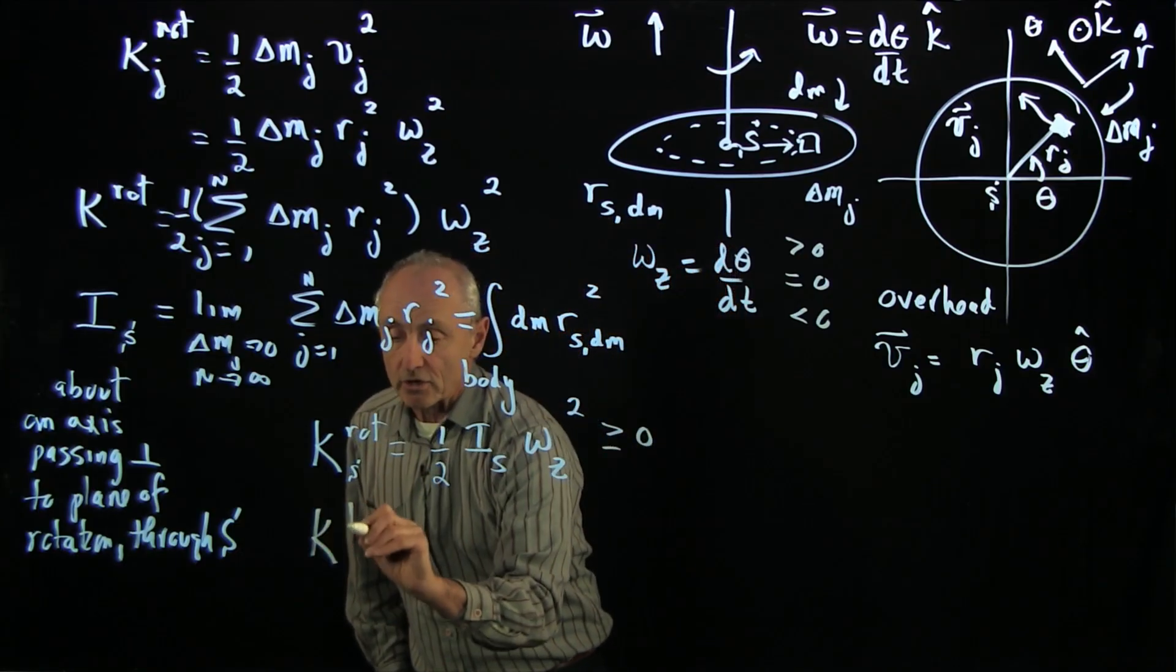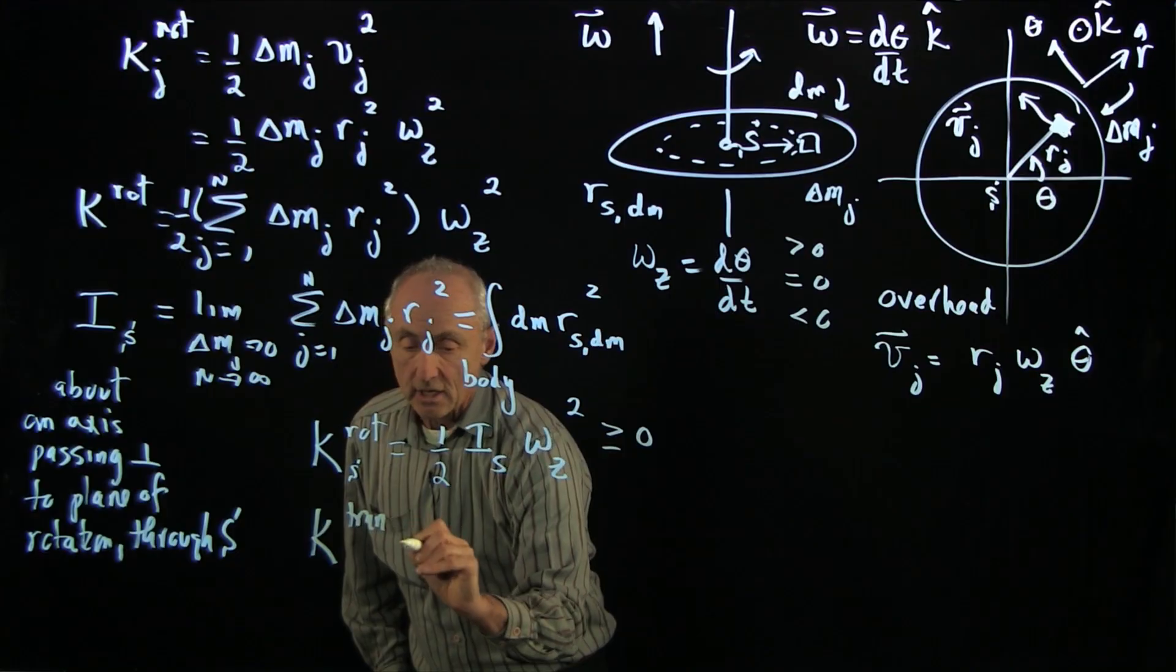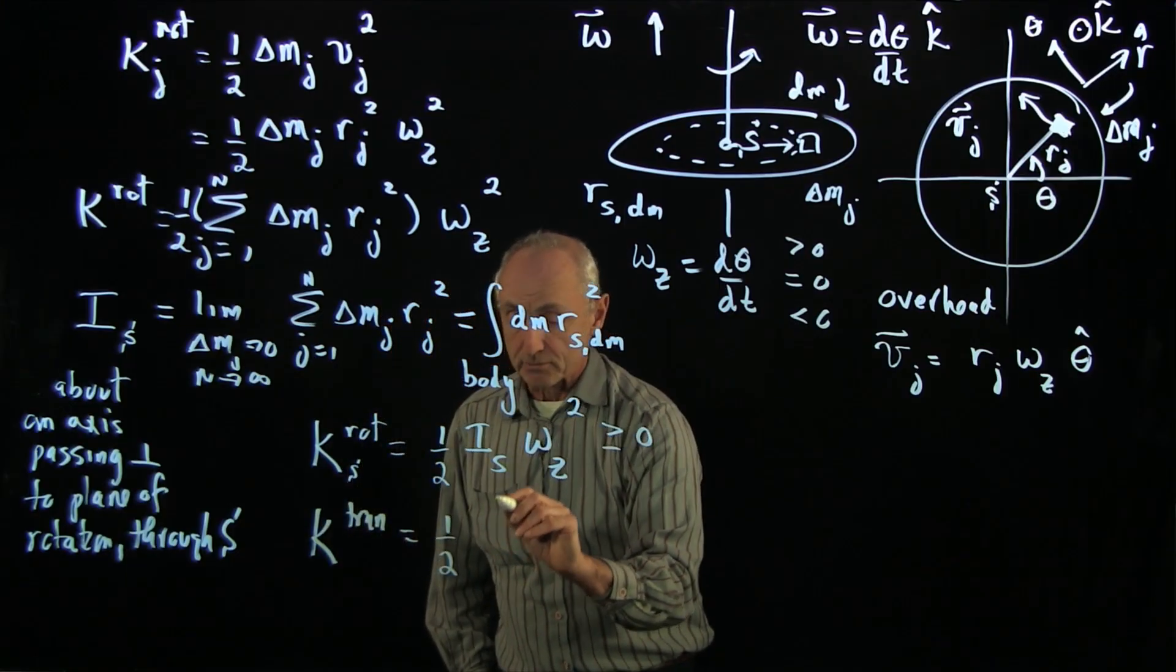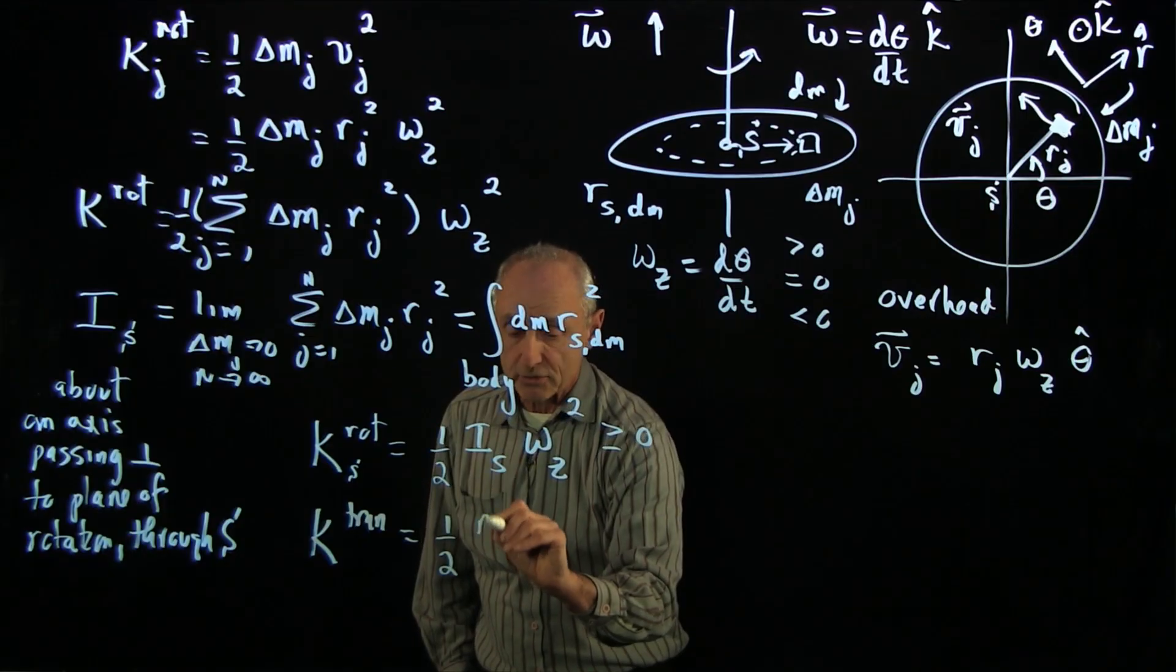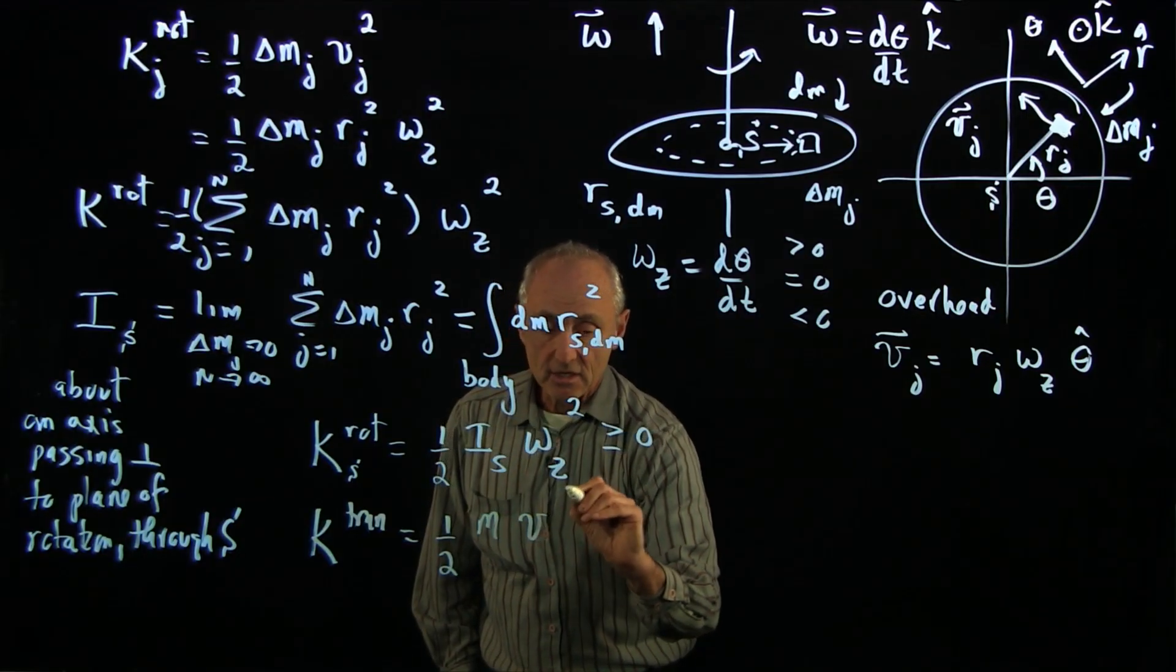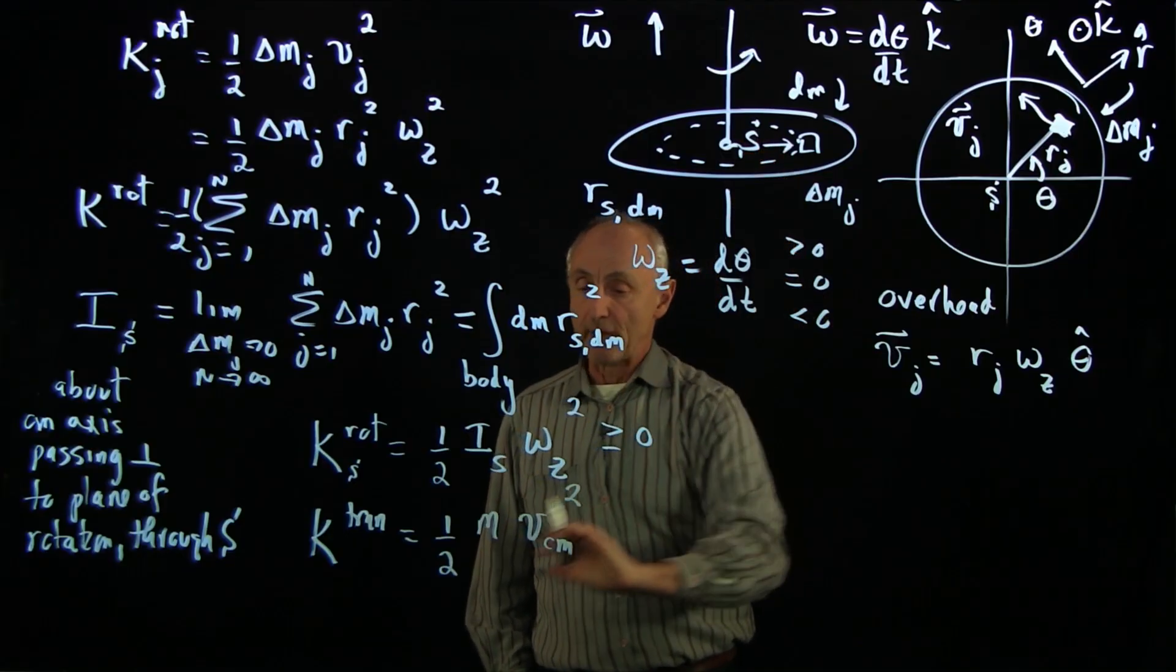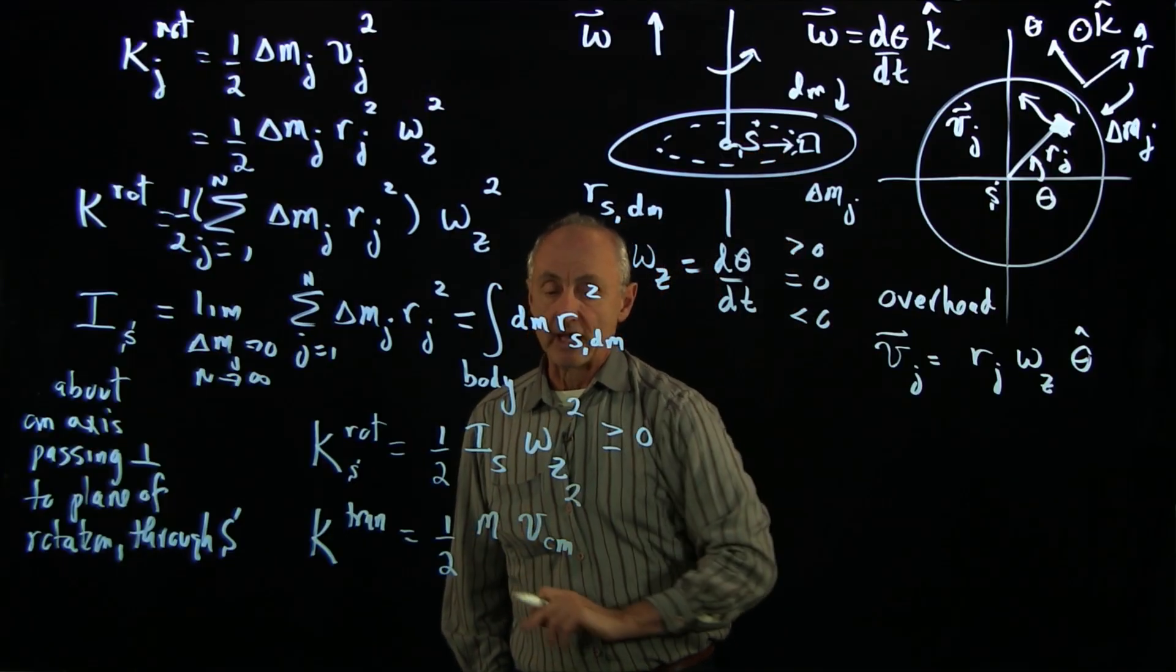Let's contrast that with our translational kinetic energy. We remember there, that was one half times the total mass of the object times v_cm squared, where we're looking at all of the object at the center of mass. And this is the total mass of the object.